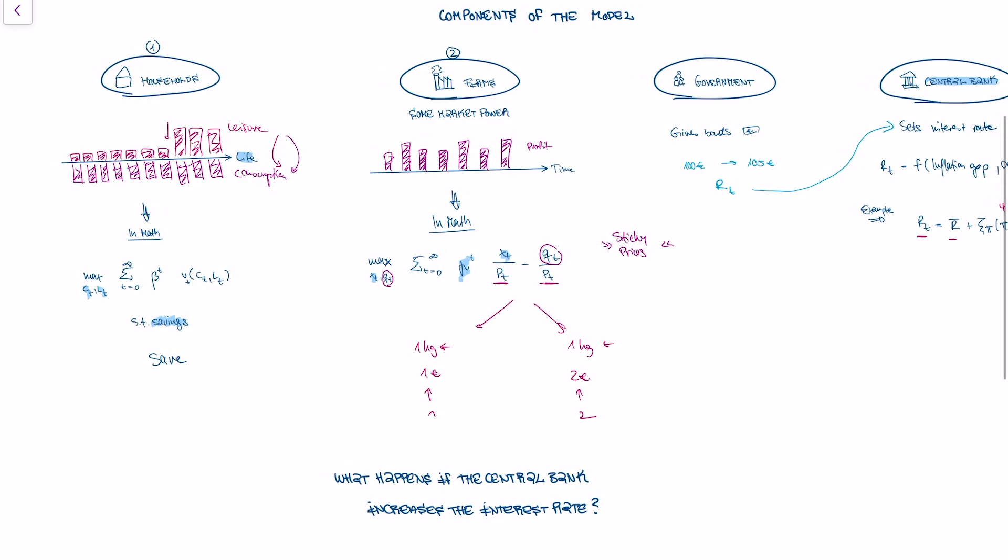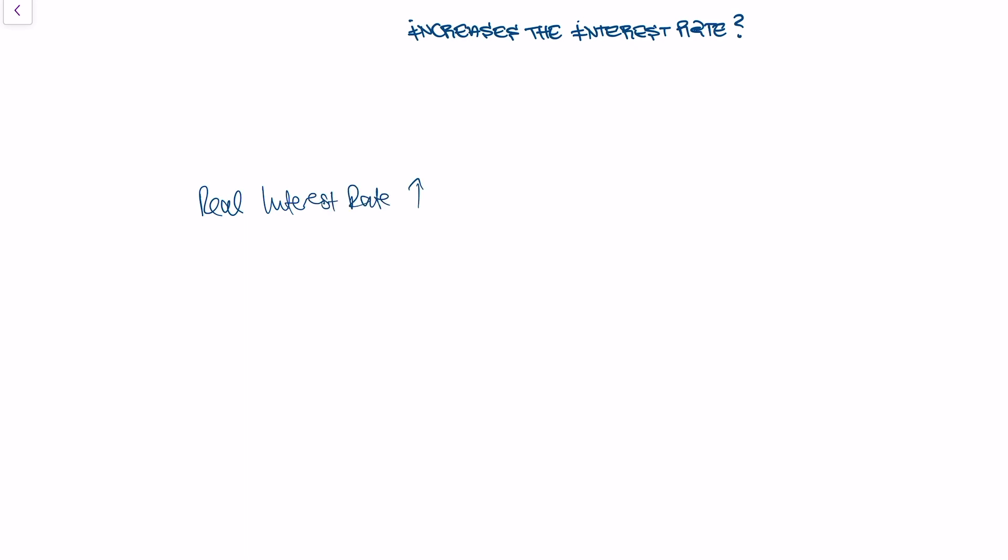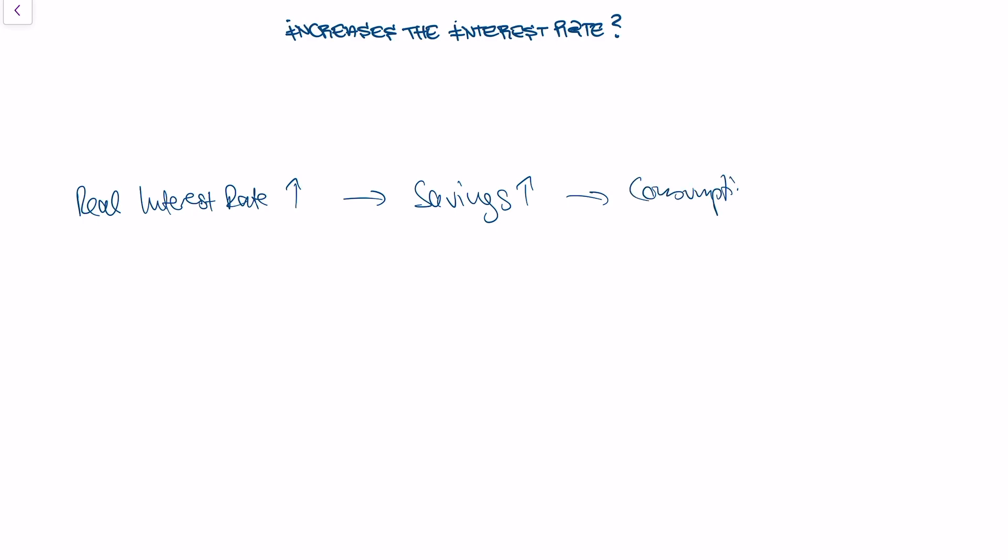What is the chain of action that we have found through the model? We said the real interest rate goes up. This means that savings go up. This means that consumption goes down. This means that production goes down. And this means that employment goes down because I need less people to produce.